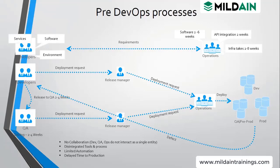Everyone has their own processes and those processes are not integrated with each other. Most tasks are manual with limited automation. The impact of this is delayed time to production. A request comes in, gets developed, takes time — and by the time it is released to the customer, a new change has come because of market changes. Then changes have to be made again, so it is not faster to market.